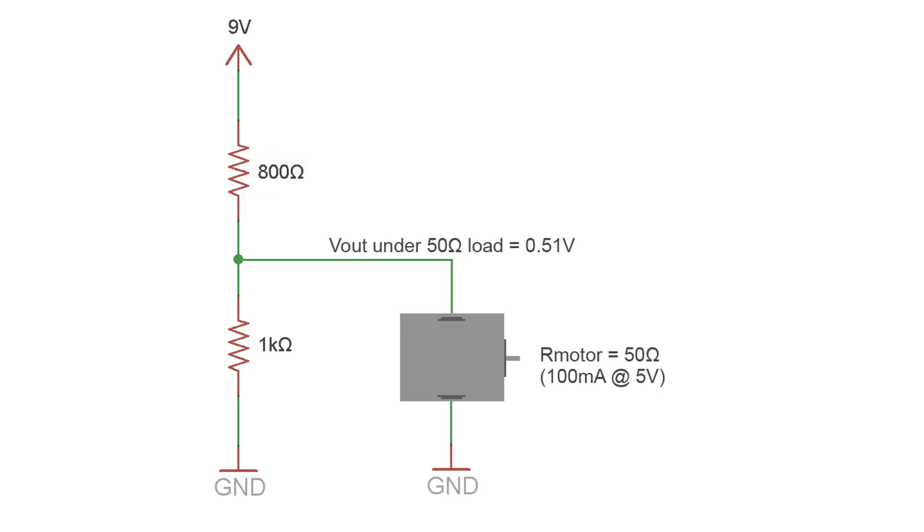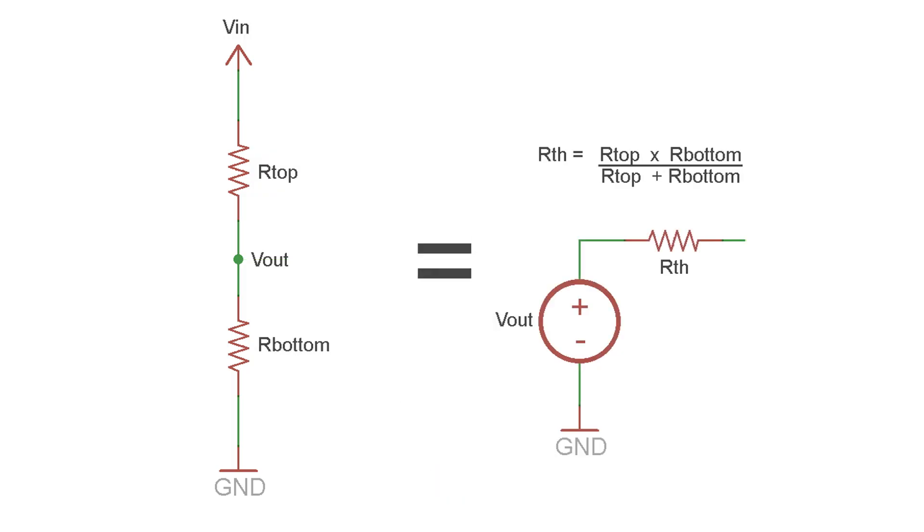But if I try to power this motor that would normally draw 100 milliamps from 5 volts, the voltage drops down to half a volt, and the motor won't do anything. So this voltage divider would be a terrible power supply for a motor. Generally speaking, you shouldn't be using a voltage divider if you have to supply more than 10 milliamps.